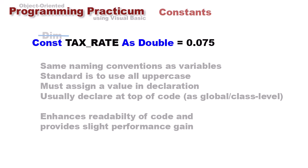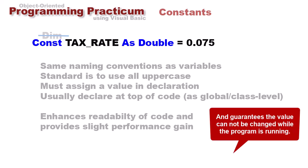Well, why use a constant? One is it enhances the readability of code. We can look at the constant, and because it's all uppercase, we know right away it's a constant value, but also declared at the top of the code. So if the tax rate should change, it's easy to find where that is and to change that value in our code. And it may provide a very slight performance gain in some situations. It really has more to do with the readability.